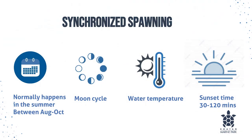These broadcast spawners have a synchronized spawning that normally happens in the summer months between August and October, so you'll want to plan before the summer to get ready to get in the water and monitor. Some corals, especially in the Northern Caribbean, will spawn sooner than in the south — something to keep in mind as you prepare. They have cues from the moon cycle and water temperature to decide when to spawn. Spawning normally happens 30 to 120 minutes after sunset, but some species spawn before sunset, which is nice if you don't have much experience with night diving.